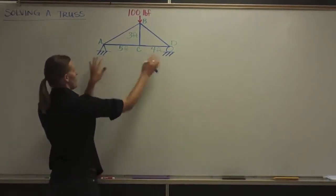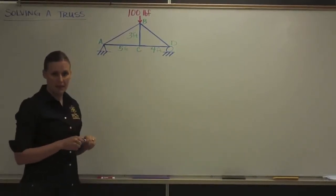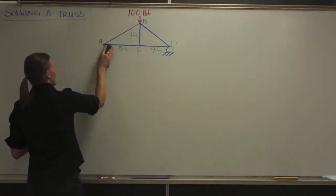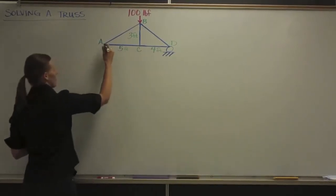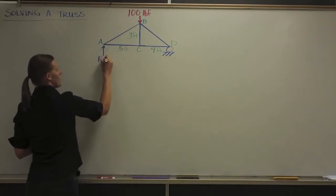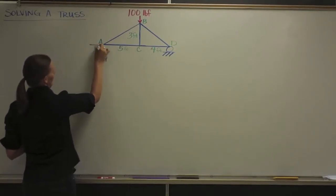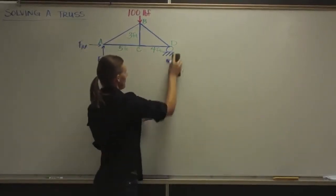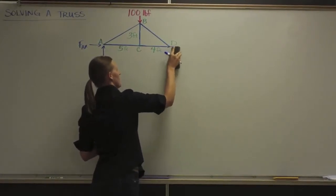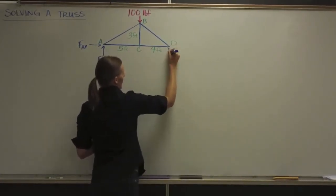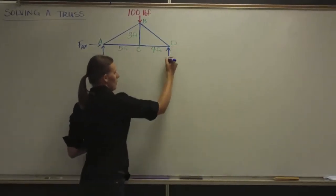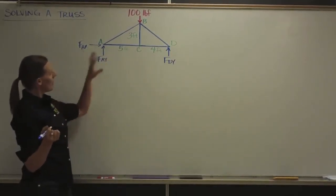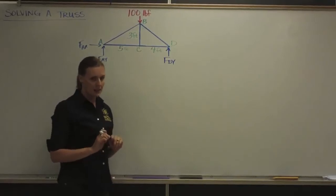Let's go ahead and start by removing the pin and the roller and replacing them with the forces they represent. A pin has both horizontal and vertical forces. This is F-A-Y, and then I've also got F-A-X in the horizontal direction. The roller only has one force on it, and it supports from below — this is F-D-Y. From this information, you can decide if this truss is statically determined.